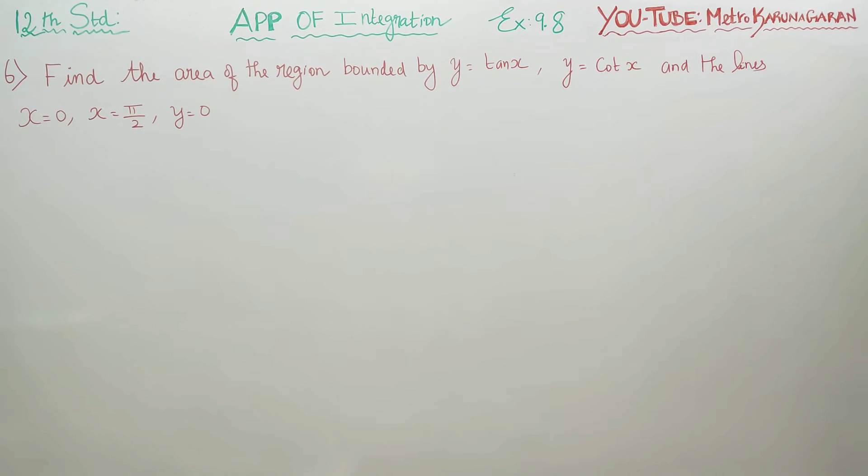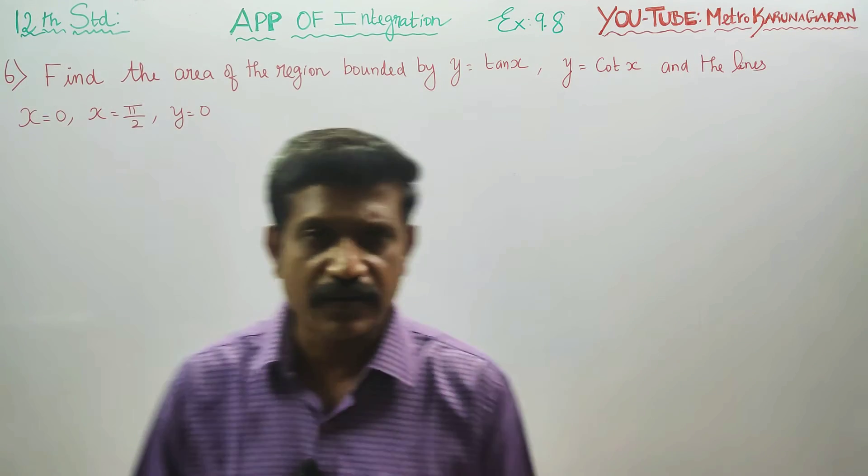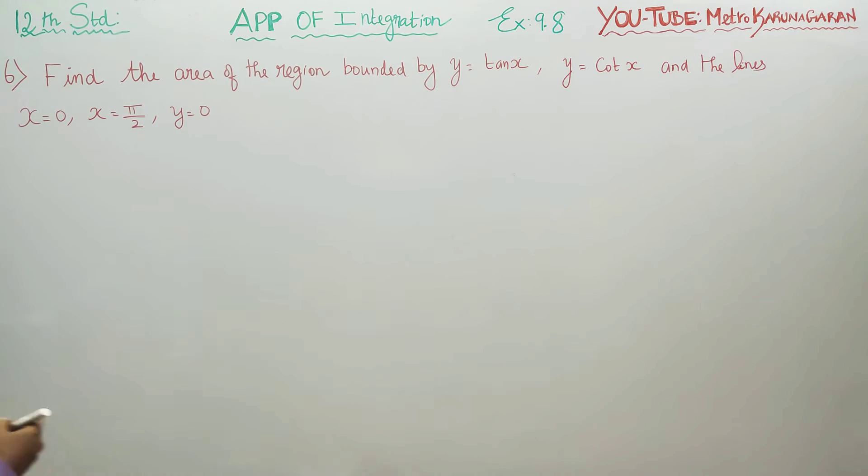Dear 12 standard students, in exercise number 9.8 sum number 6, find the area of the region bounded by y equals tan x, y equals cot x between the range 0 to pi by 2.